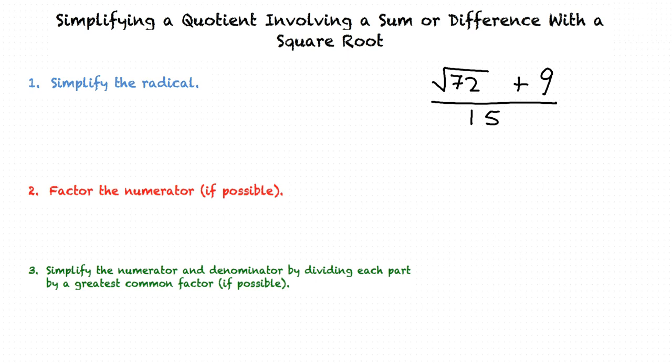We will now follow these steps. If we disregard the 9 and the 15 in the problem and focus on the square root of 72, we can think of factors of 72 that are perfect square numbers and pull them out of the square root. Since 36 and 2 are factors of 72, and 36 is a perfect square, it can be pulled out to make 6 times the square root of 2. That looks like the simplest form of the square root.